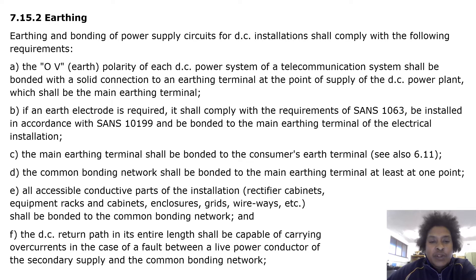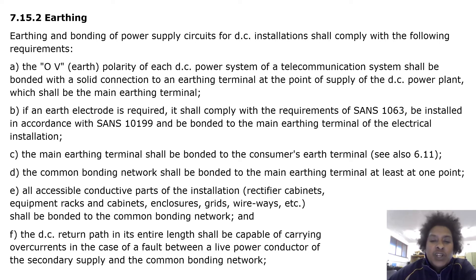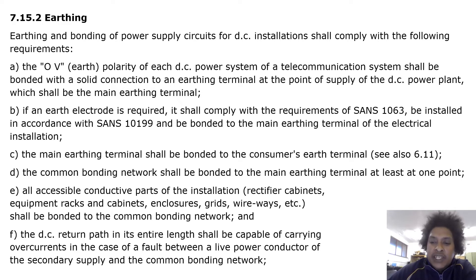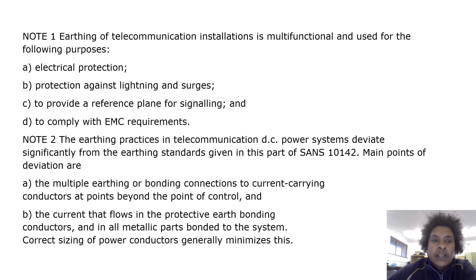All accessible conductive parts of the installation — rectifier cabinets, equipment racks and cabinets, and closers, grids, wireways, etc. — shall be bonded to the common bonding network. The DC return path in its entire length shall be capable of carrying overcurrents in the case of a fault between a live power conductor of the secondary supply and the common bonding network.